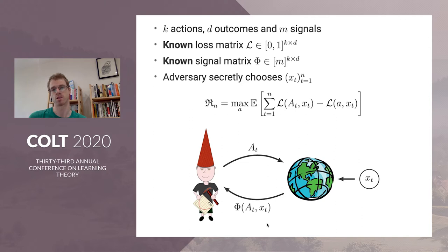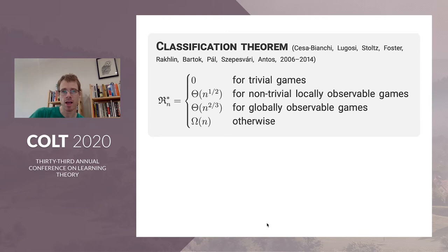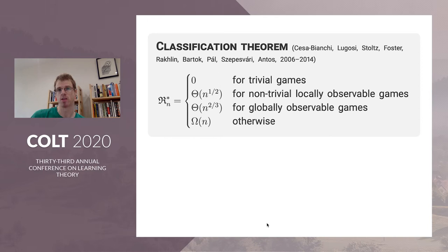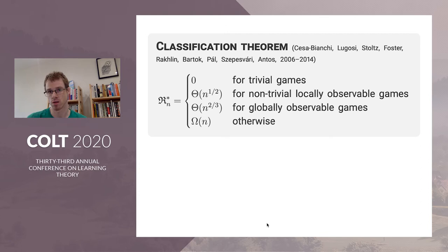This is partial monitoring, and the main result proven over around a decade is that the minimax regret — the worst case regret depending on the matrices — falls into one of four categories. Either you have trivial games, where the learner can figure out from the very beginning which action is optimal and just play it. Then there are two interesting categories: locally observable games and globally observable games, where you either get square root of n or n to the two-thirds.